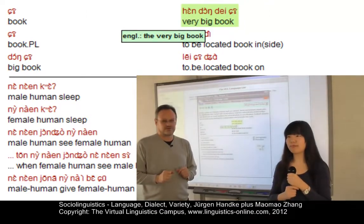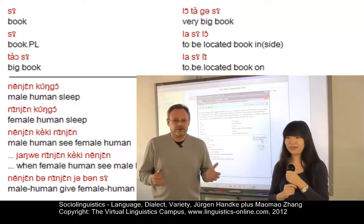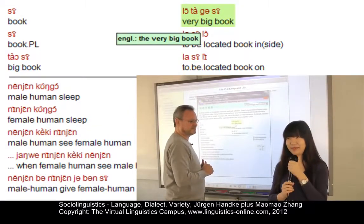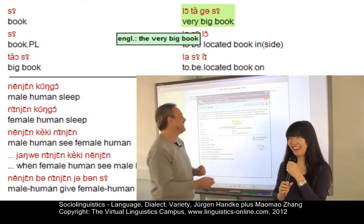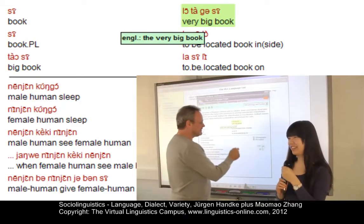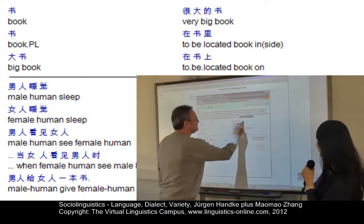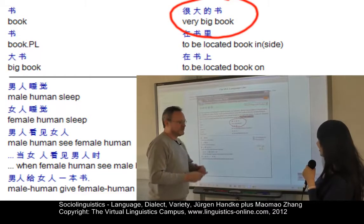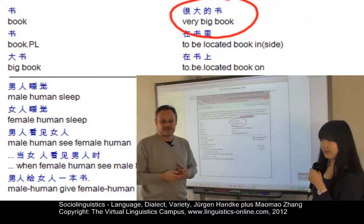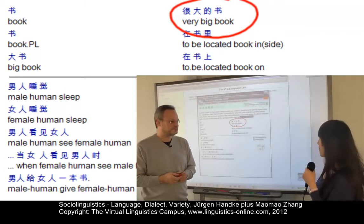Now we will look at a different variety of Chinese, and again we want your reaction. Here we have a speaker from Suzhou. Mao Mao's reaction: she does not think she can understand it. But then we look at the written form, and she can read it. So in all three cases — and this is the interesting thing — we have the same writing system that unites Chinese and its varieties. The phonology was completely different, though.